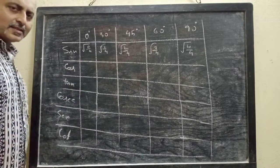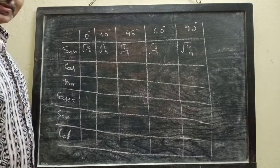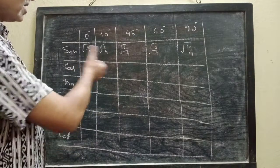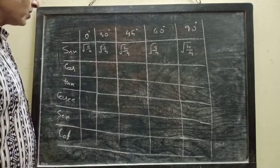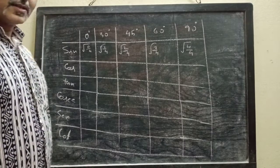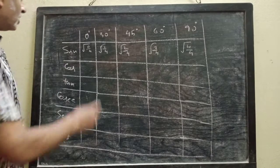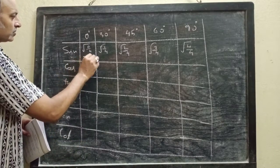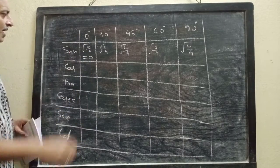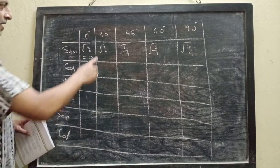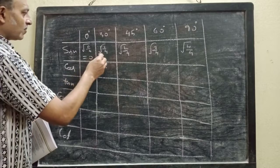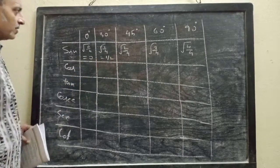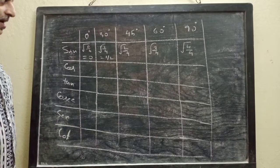There is no scientific reason behind writing this — it is just a sequence which will help us remember the values. 0 by 4 is 0, its square root is 0. So I get sin 0 degree is 0. Next, square root of 1 by 4, this is half. So I get sin 30 degree is half.